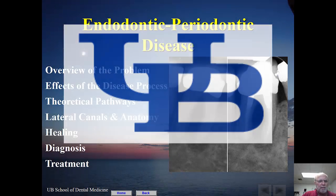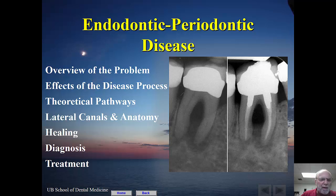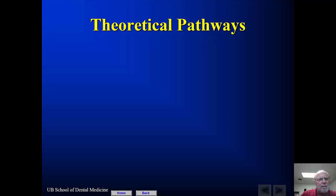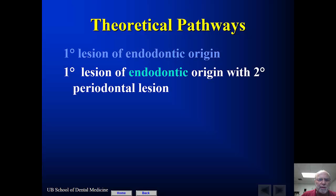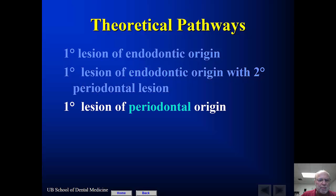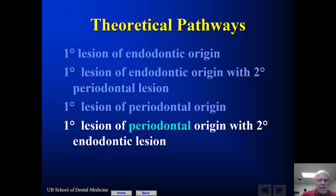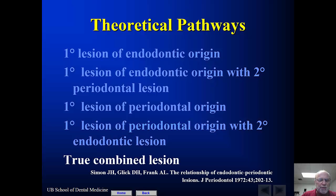We'll spend some time talking about the theoretical pathways of endodontic and periodontal disease. Classically in the endodontic literature there are five pathways: first, a primary lesion of endodontic origin; next, a primary endodontic lesion with a secondary periodontal lesion; then a primary lesion of periodontal origin; a primary periodontal lesion with a secondary endodontic lesion; and finally a true combined lesion where the endodontic and periodontal disease processes merge.